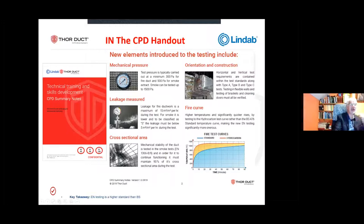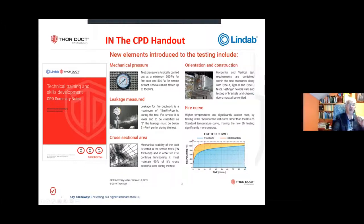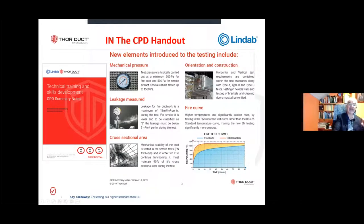The fire curve under EN is also significant. It's a hydrocarbon fire curve that reaches similar temperatures to BS 476, but gets there much faster — so the duct gets an immediate thermal shock. The 'lobster effect' under BS — where the duct had time to settle — is no longer present. The cross-sectional area and leakage requirements are the biggest changes. From a smoke control and energy perspective, that makes sense: we need the duct to perform and stay open.